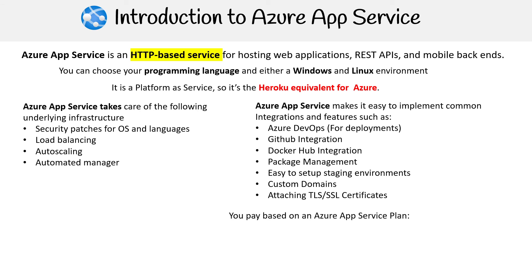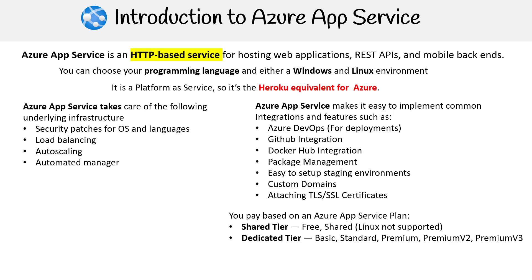The way it works is you pay based on an Azure App Service plan. Honestly, I find these really confusing — I really like how AWS does Elastic Beanstalk because you're just paying for the underlying services. But Azure has all these tiers: you have the shared tier, which is free and doesn't support Linux; the dedicated tier, which is basic, standard, premium, premium version two and three; and the isolated tier.